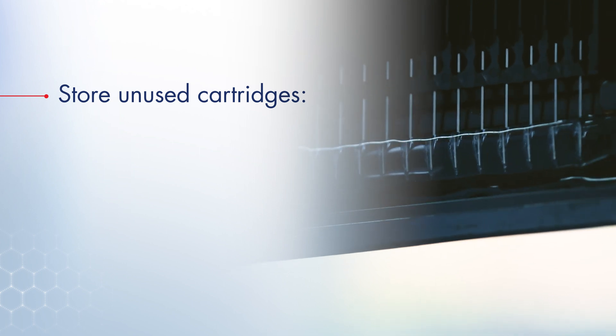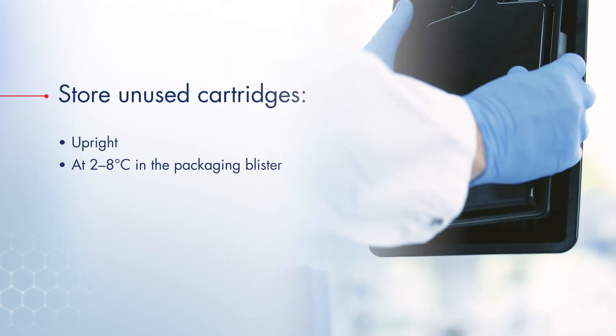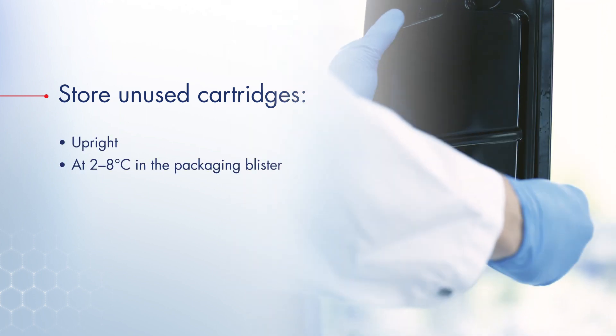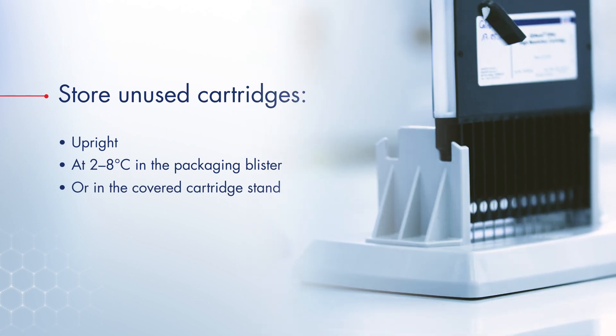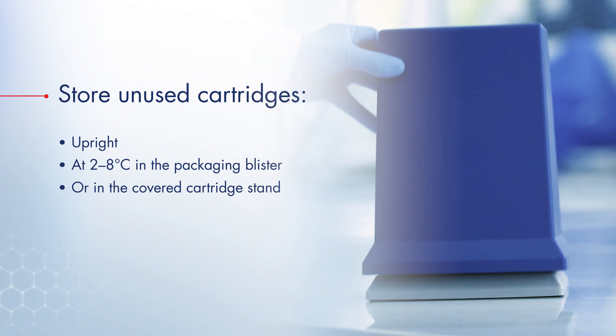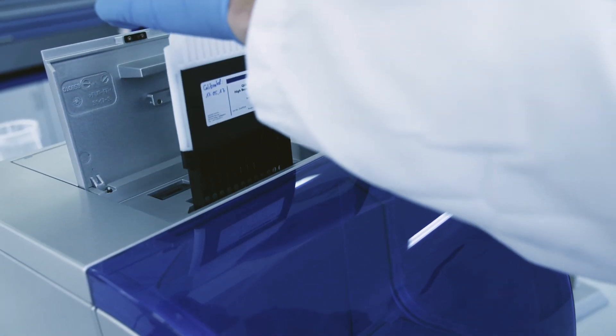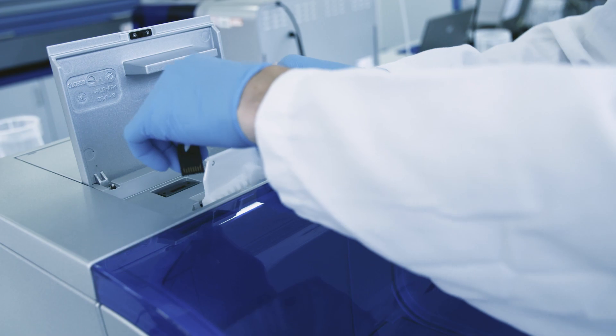Unused cartridges should always be stored upright at 2-8°C in the packaging blister or covered cartridge stand to protect the gel from drying and direct light. If the cartridge is stored in the QIAxcel Advanced, the instrument should always be switched on.